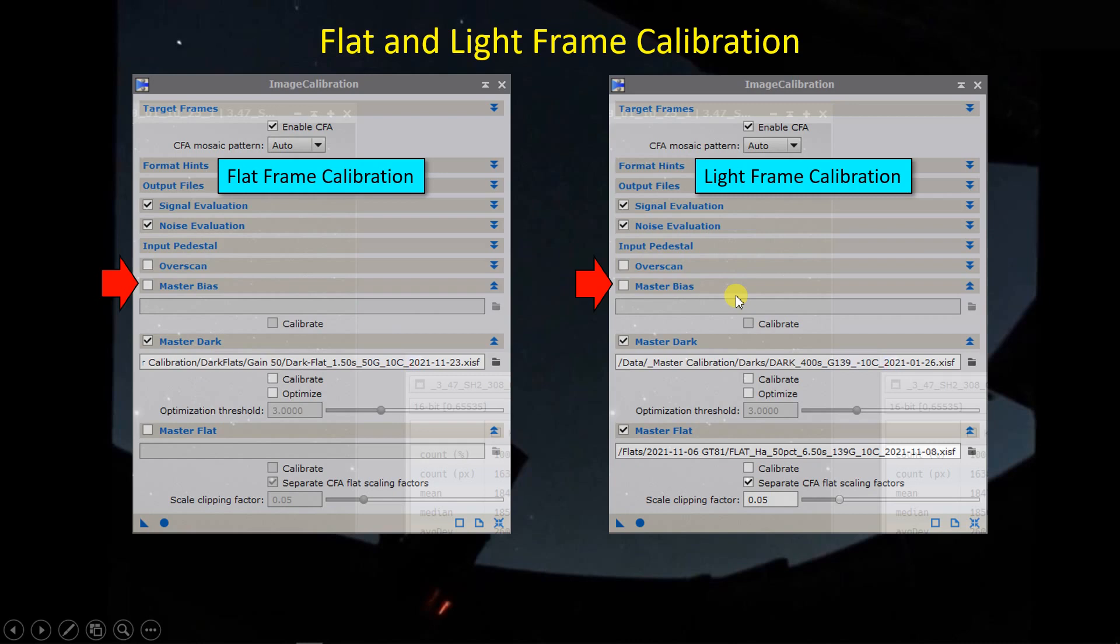The bias, which is a measure of the read noise when you read off the data from the sensor and send it down the line back to your PC, that read noise is captured by the bias frame, by the master bias. I'm not using an explicit master bias file. The master bias is included by definition in the master dark frame, so we don't want to include that twice. So there is no master bias the way I'm doing this.